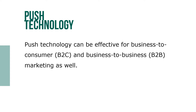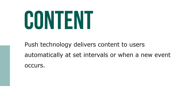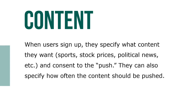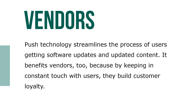For example, a car manufacturer can send the latest information on new models, prices, and features to all of its dealers at the same time. Push technology delivers content to users automatically at set intervals or when a new event occurs. When users sign up, they specify what content they want – sports, stocks, political news, and so on – and consent to the push. They can also specify how often the content should be pushed. Push technology streamlines the process of users getting software updates and updated content.